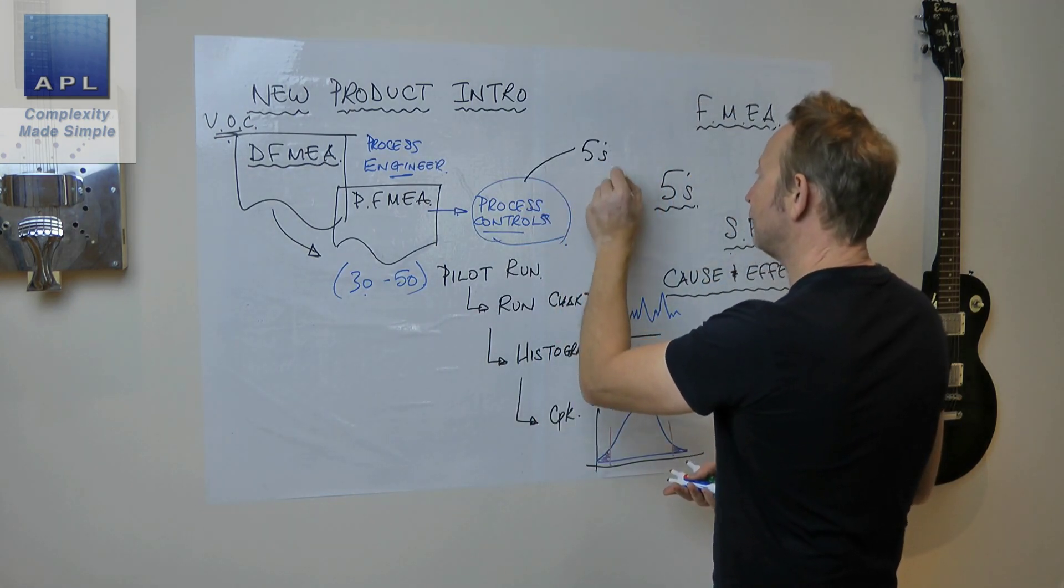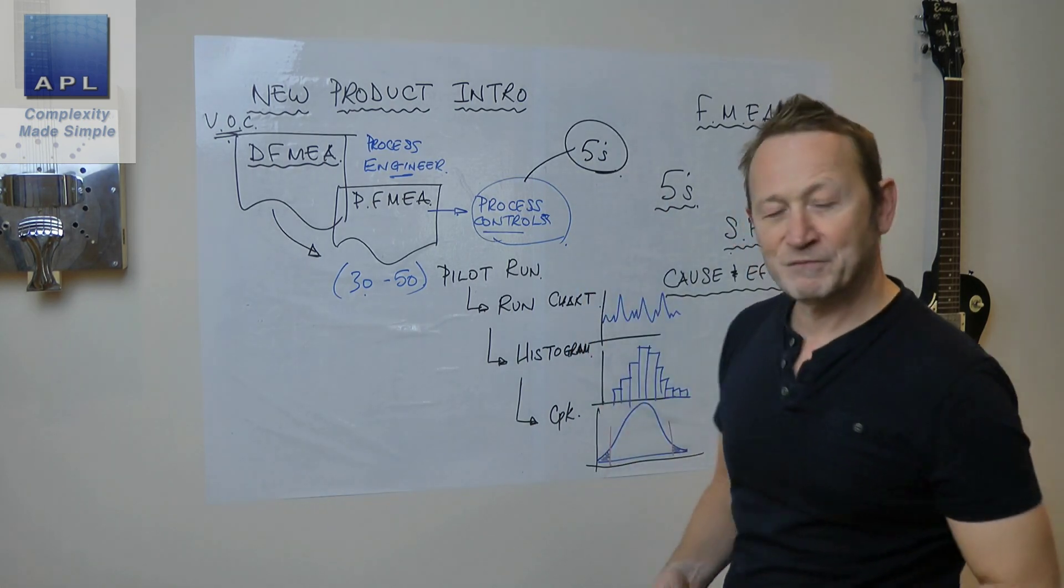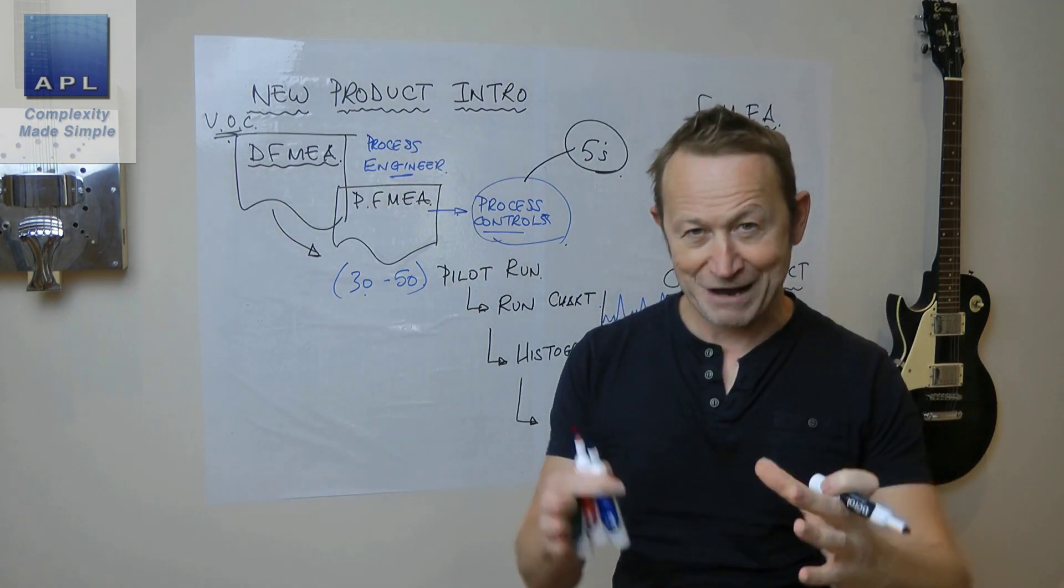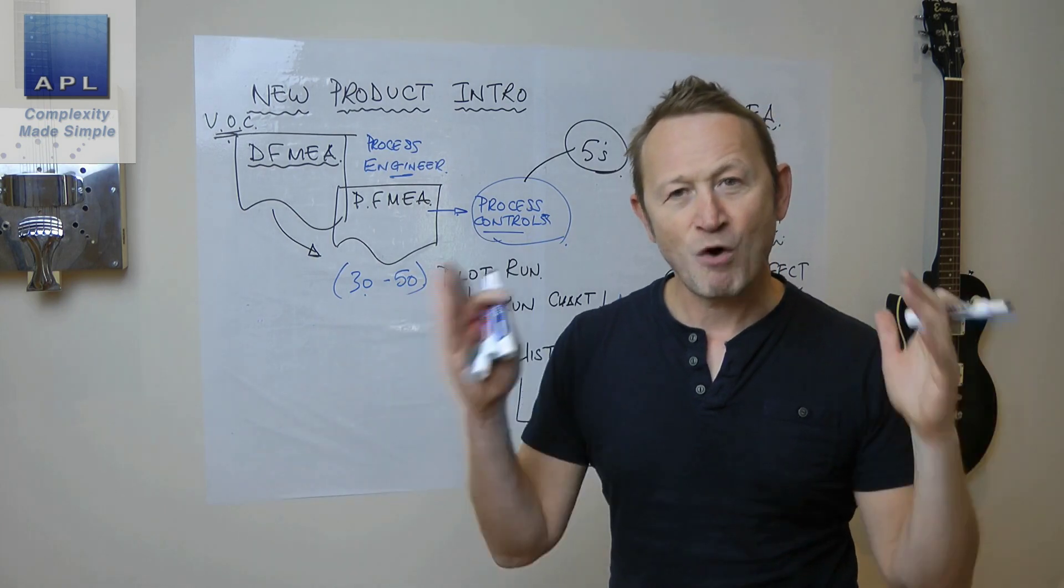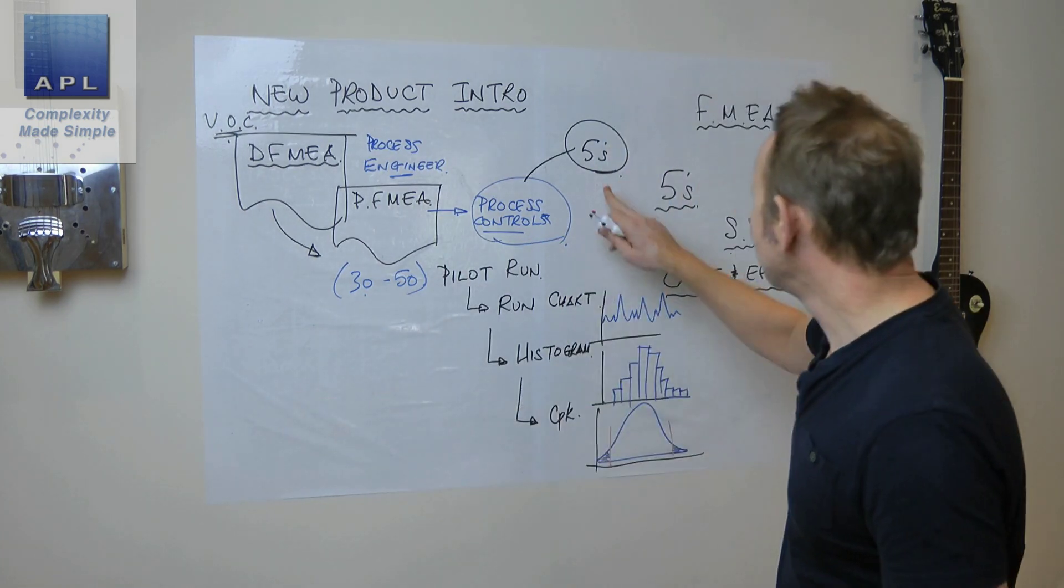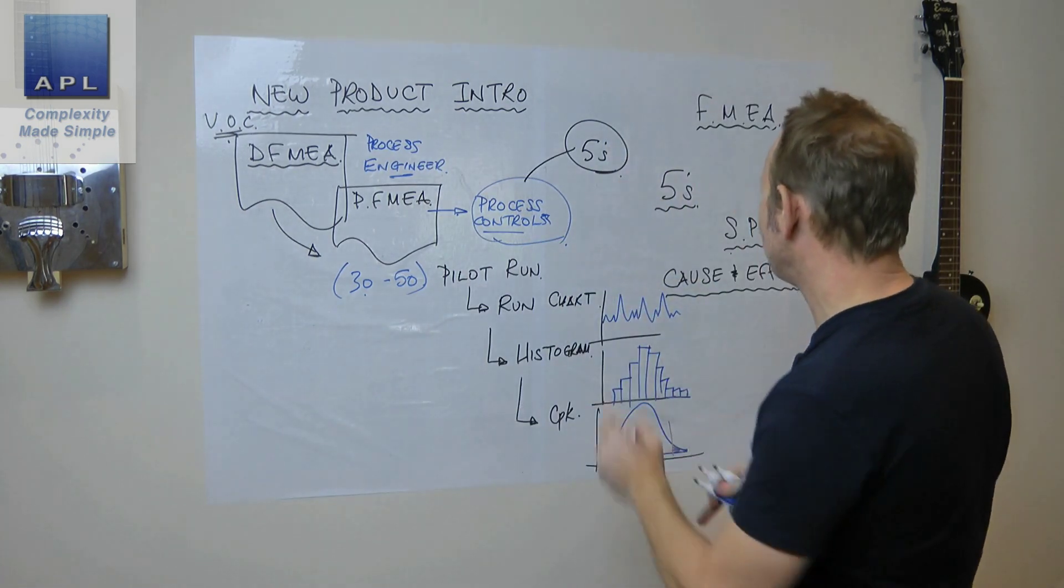We're going to the point of activity and I'm going to put some visual controls. I'm going to make everything visual. Why? Because if I make everything visual then my ISO 9000 will work.